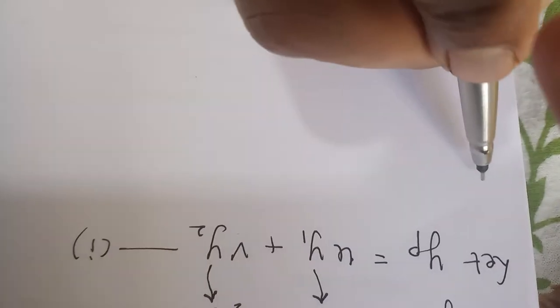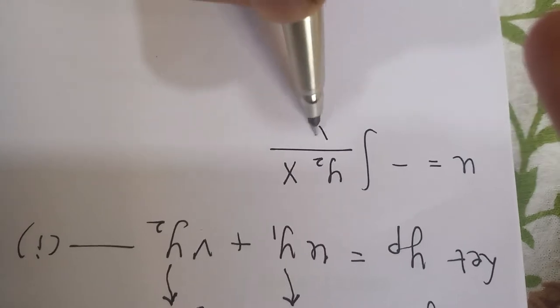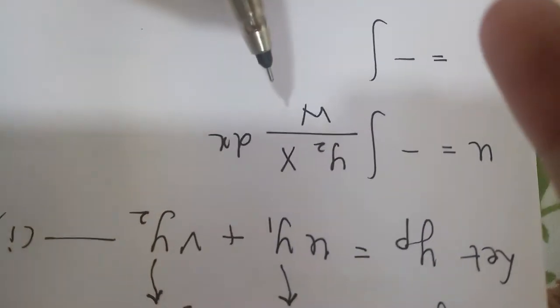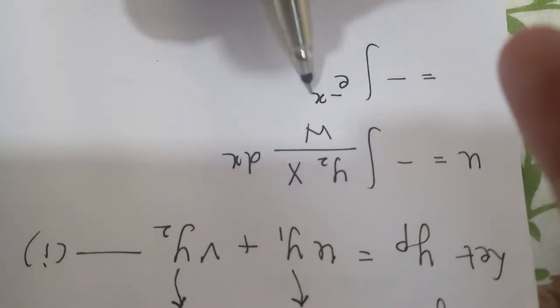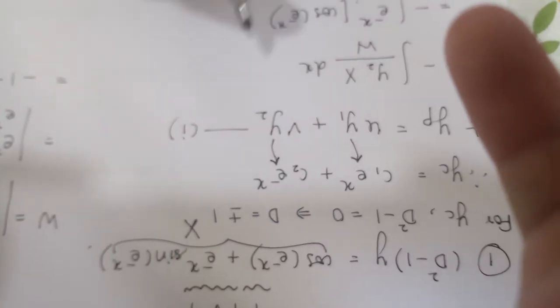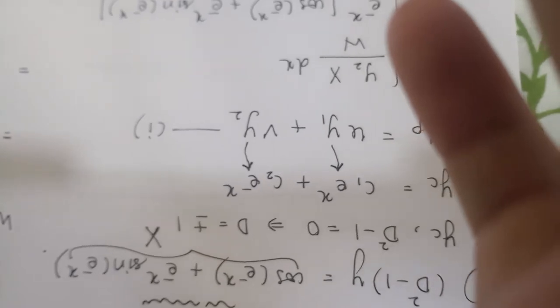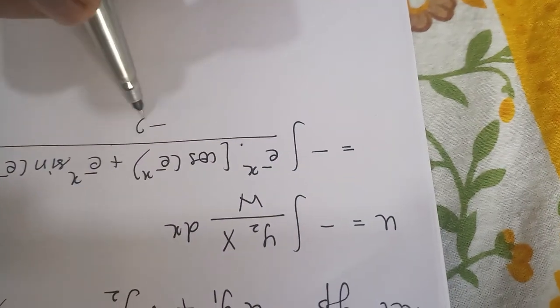Now let us see how this W is going to be useful in finding u and v. u is given by the formula: minus integration of y2 times capital X upon W dx. That will be equal to minus of integration of y2, which is e raised to minus x, times capital X which is cos of e raised to minus x plus e raised to minus x sin of e raised to minus x, upon W which is minus 2, dx.